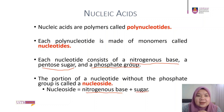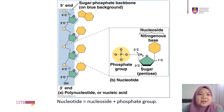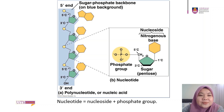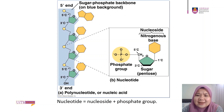Don't get confused between a nucleotide and a nucleoside — they are definitely different things. This diagram shows a polynucleotide. The monomer of the polynucleotide is the nucleotide, and we have discussed the components of a nucleotide. We have also looked at the two different pentose sugars.